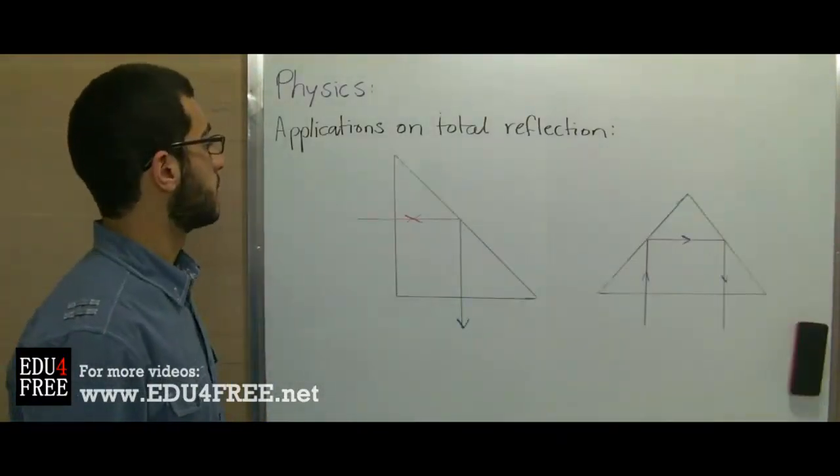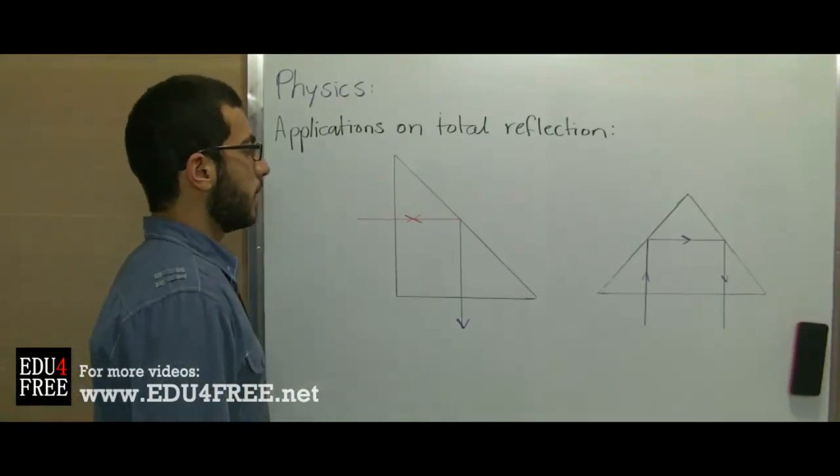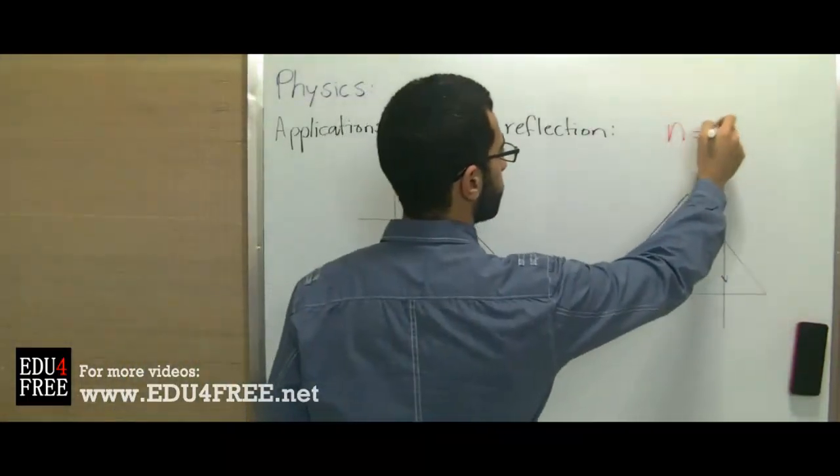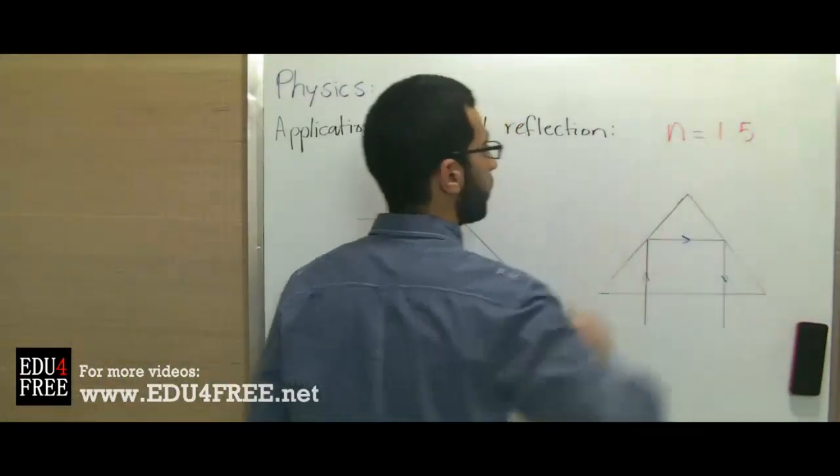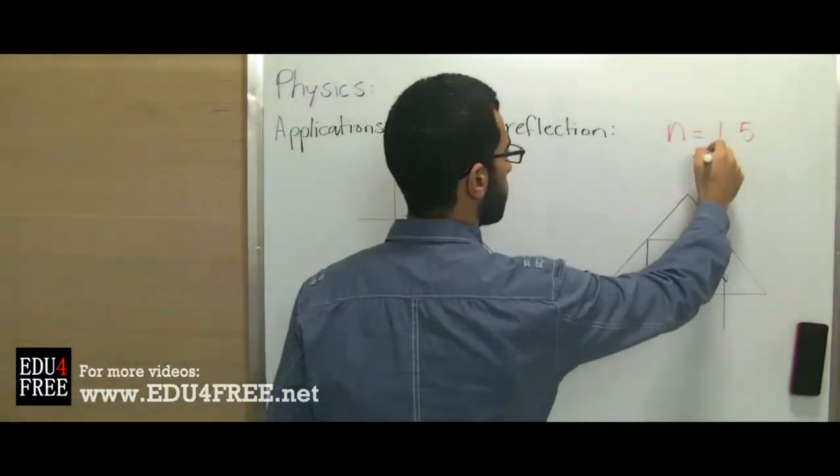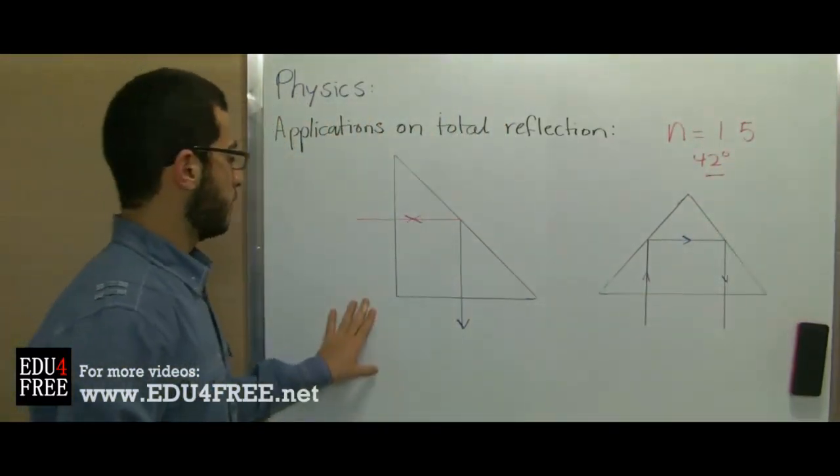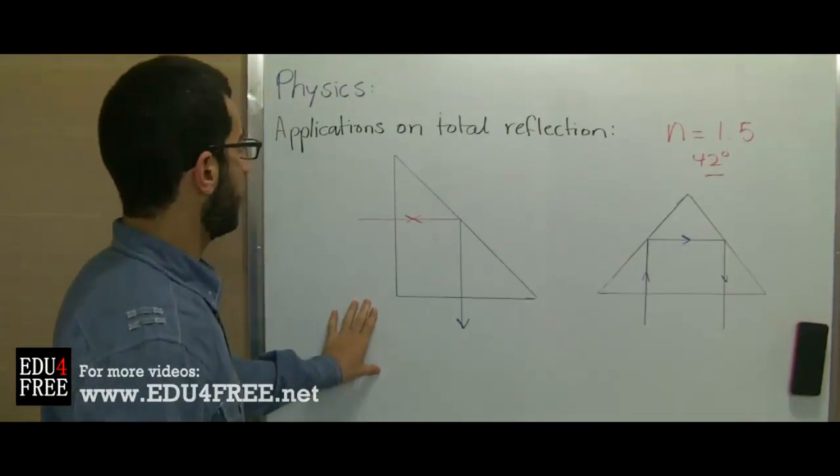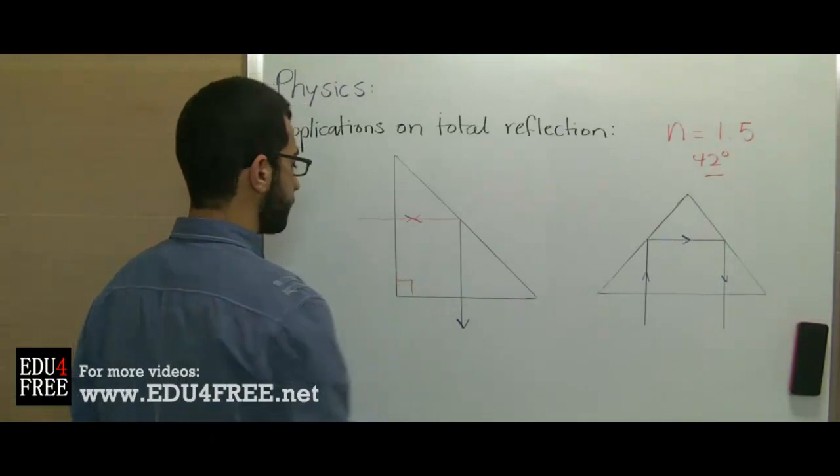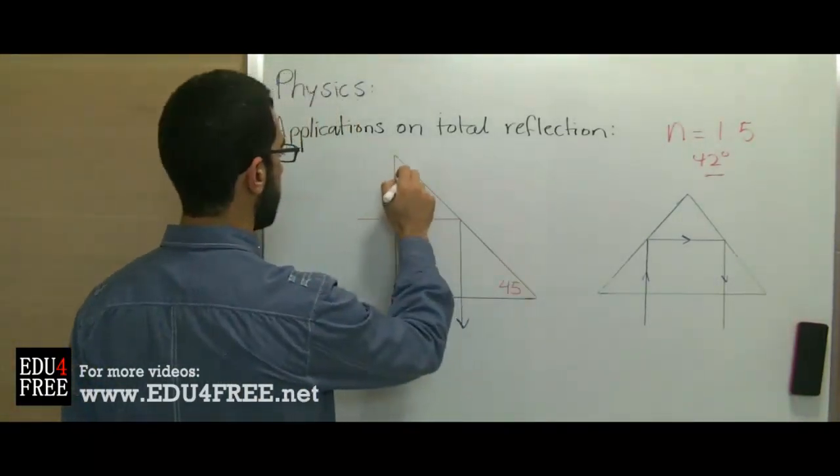The second application is the prism, the reflecting prism. The refractive index of glass is 1.5, so the critical angle between glass and air is about 42 degrees. So the prism which we use here is the reflecting prism. It's a right angle prism and it's isosceles because each of the other two angles are 45 degrees.